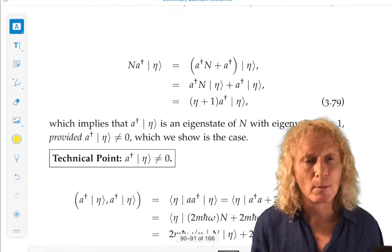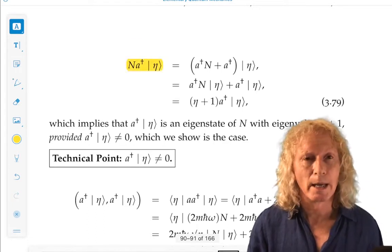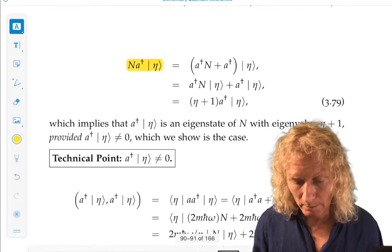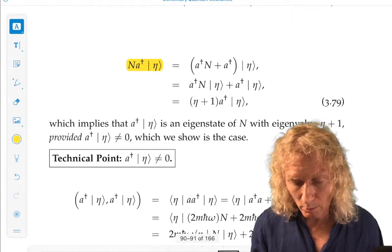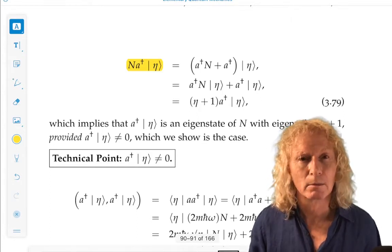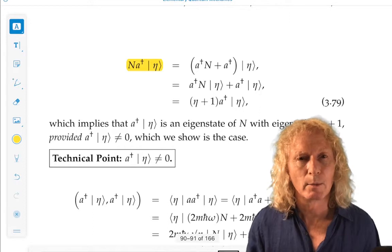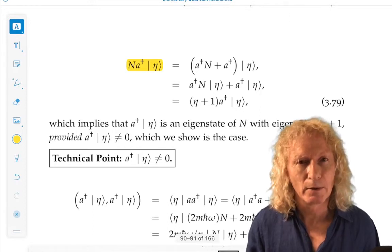So we let the number operator act on a dagger ket eta. Now, we want to get the number operator acting on ket eta because we know what the number operator does to ket eta.